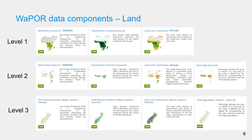In addition, for some areas, decadal land cover classification with information on the crop types is available, for example, Beka in Lebanon and Kuga in Ethiopia.